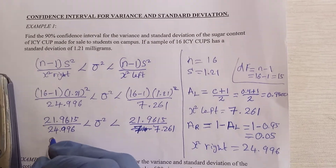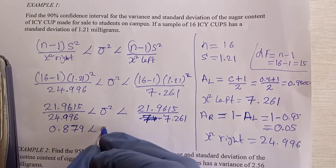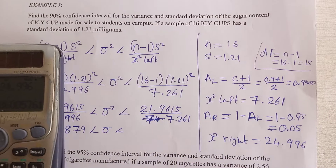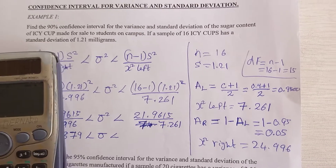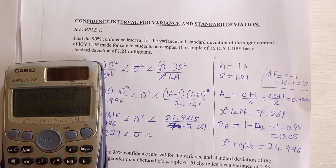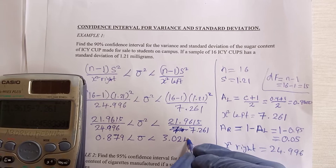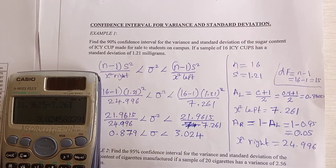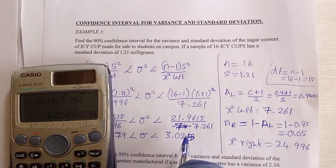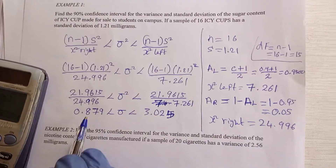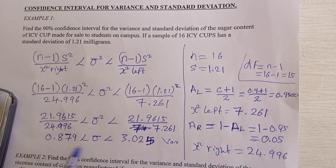Calculating: 21.9615 divided by 24.996 gives 0.879, and 21.9615 divided by 7.261 gives 3.025 (rounding 3.024 to three decimal places). So the confidence interval for the variance is: 0.879 less than σ-squared less than 3.025.